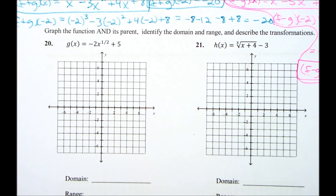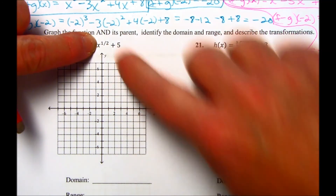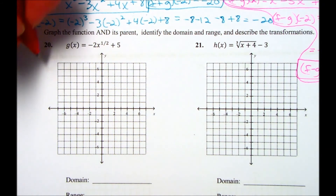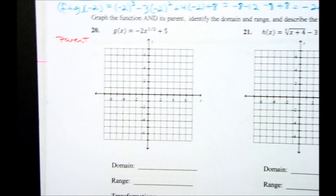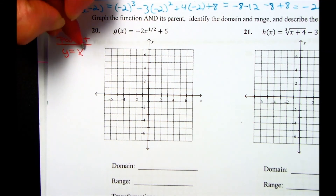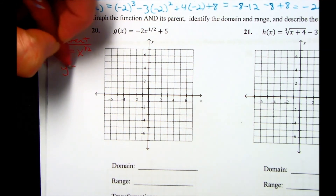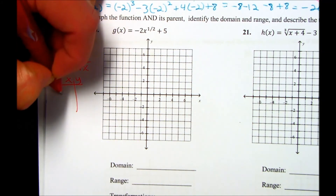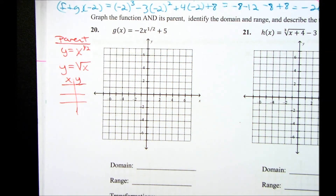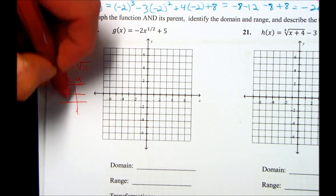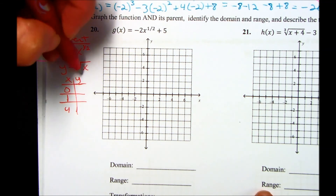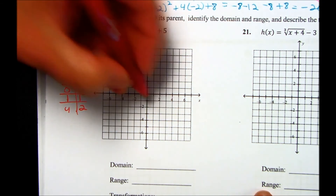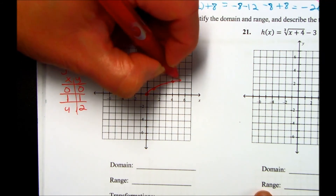Number 20: we're graphing the parent and the new function. For the parent of y = x^(1/2) (the square root of x), we can't use negative numbers with an even root. Using x = 0, 1, 4: square roots give 0, 1, 2. So the parent passes through (0,0), (1,1), and (4,2). Now for the new function g(x): the a value is −2, which affects the y-coordinates — multiply by −2, then add k = 5.